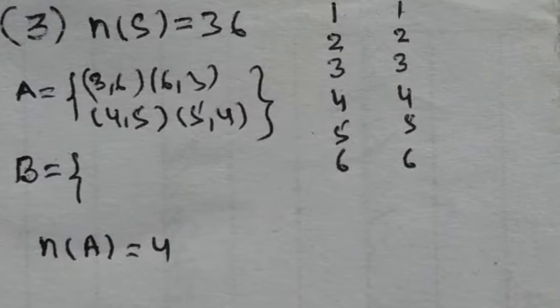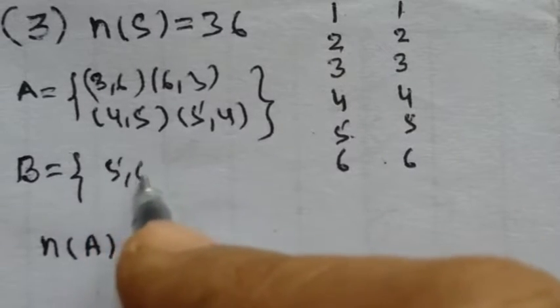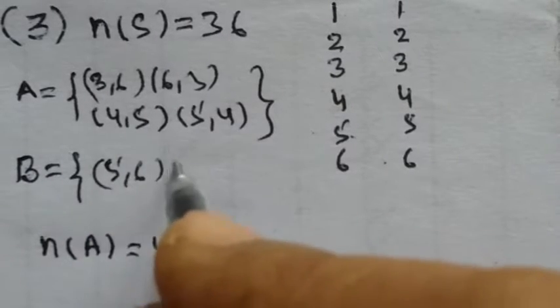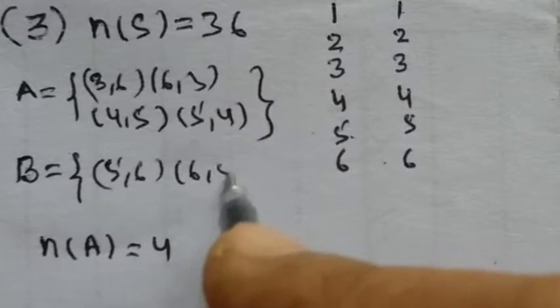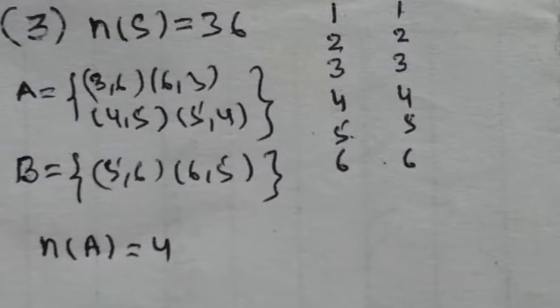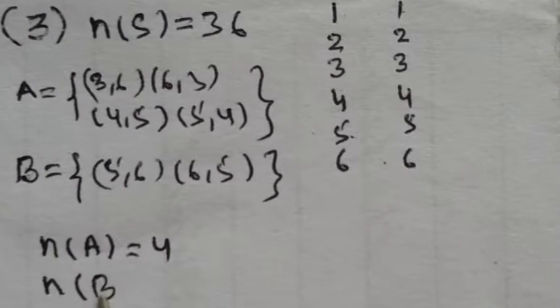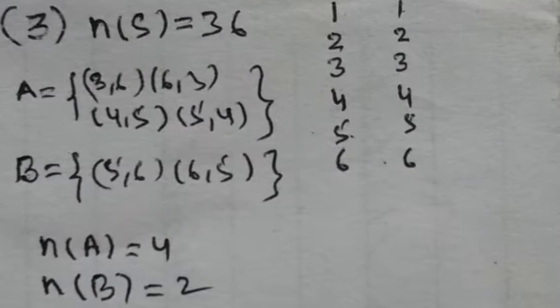For event B (sum = 11), the favorable combinations are (5,6) and (6,5). There are no other possibilities for 11. So event B has 2 favorable outcomes, and the total sample space has 36 outcomes.